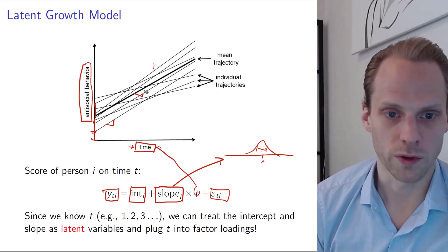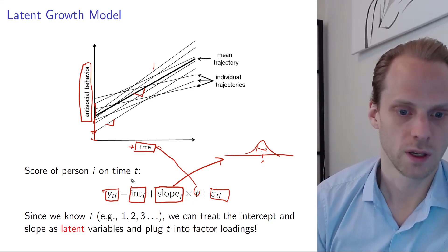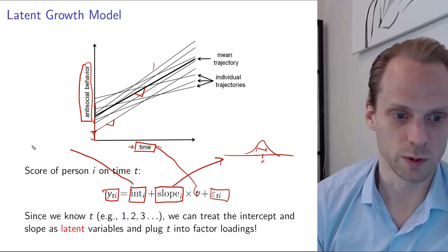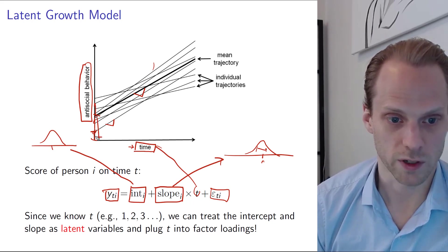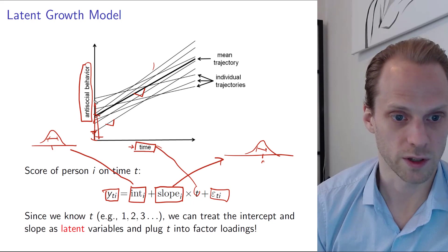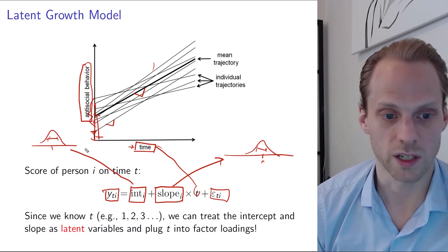And the fixed effect would be the slope of the average person. The intercept also has a distribution with some mean value, and that would be the intercept of the average person, plus deviation around it, which is this deviation here.